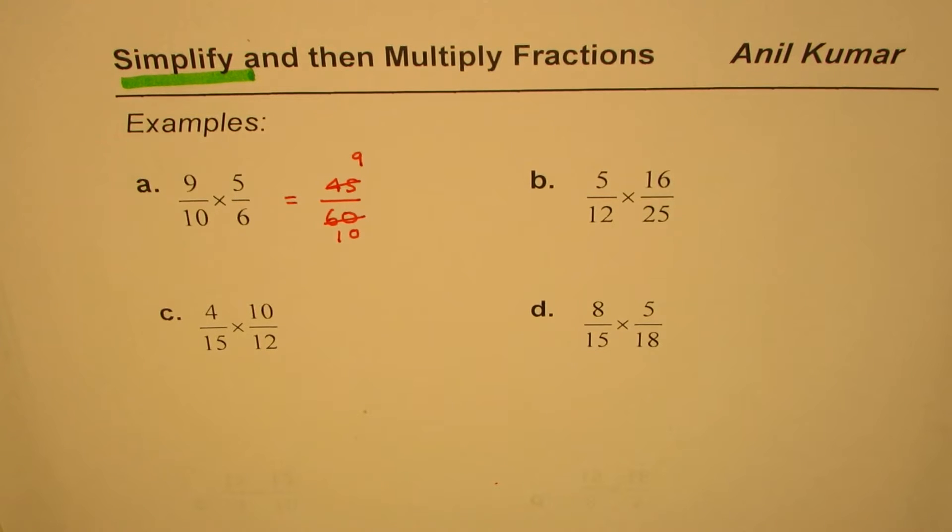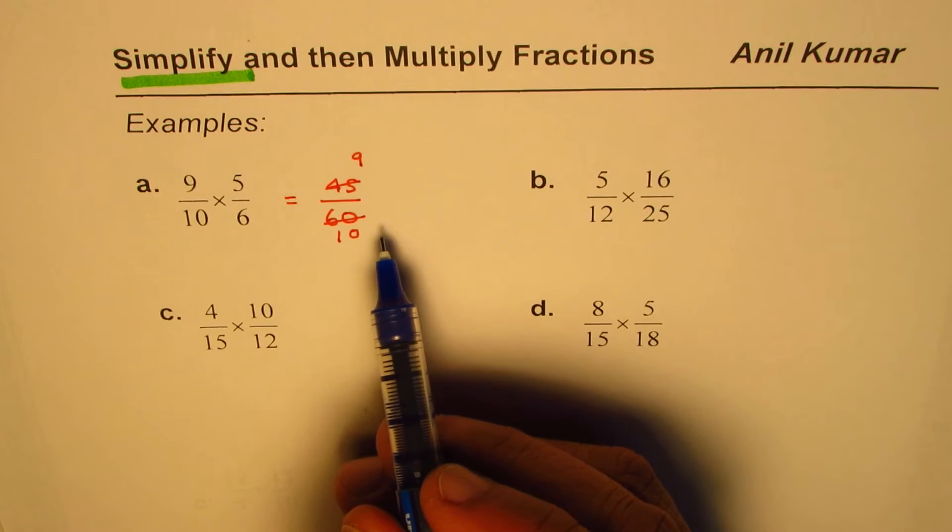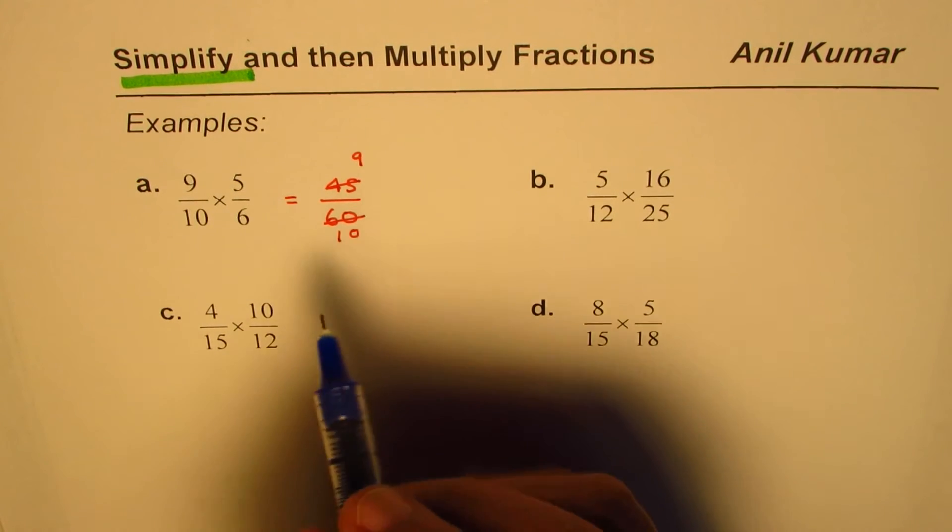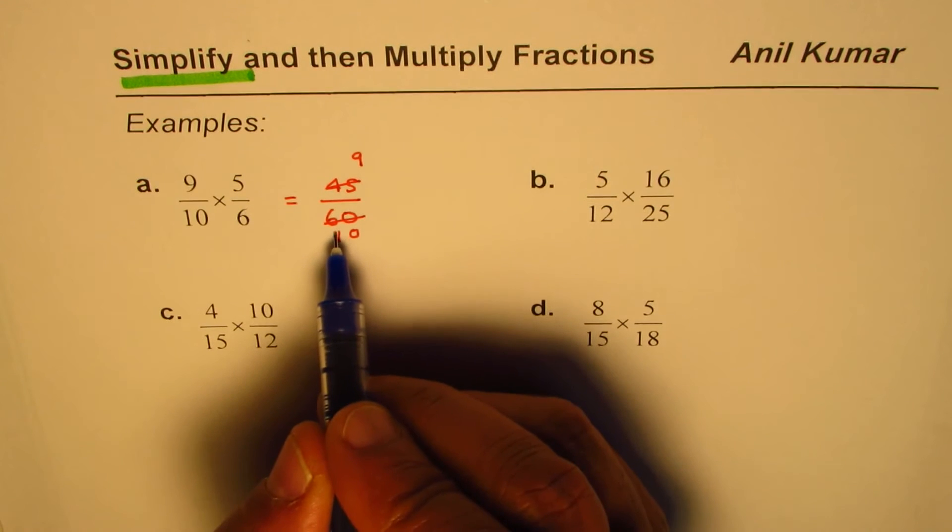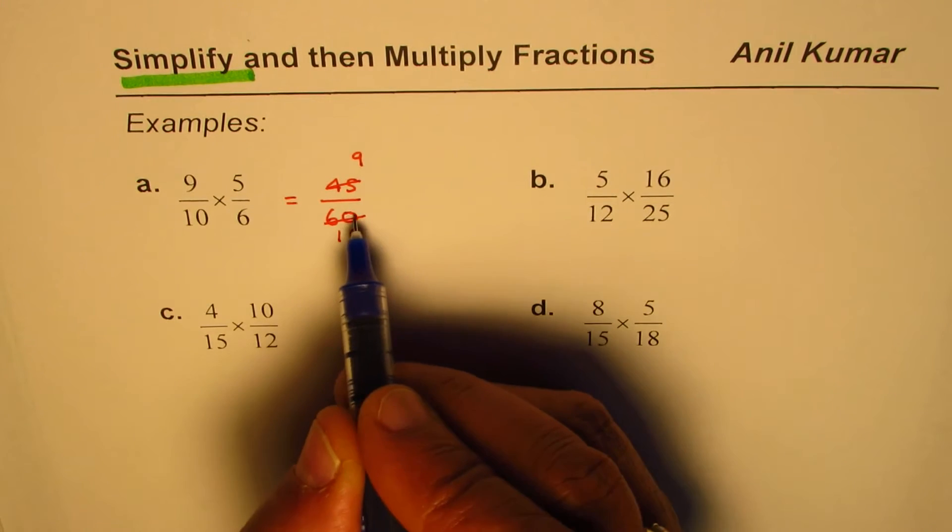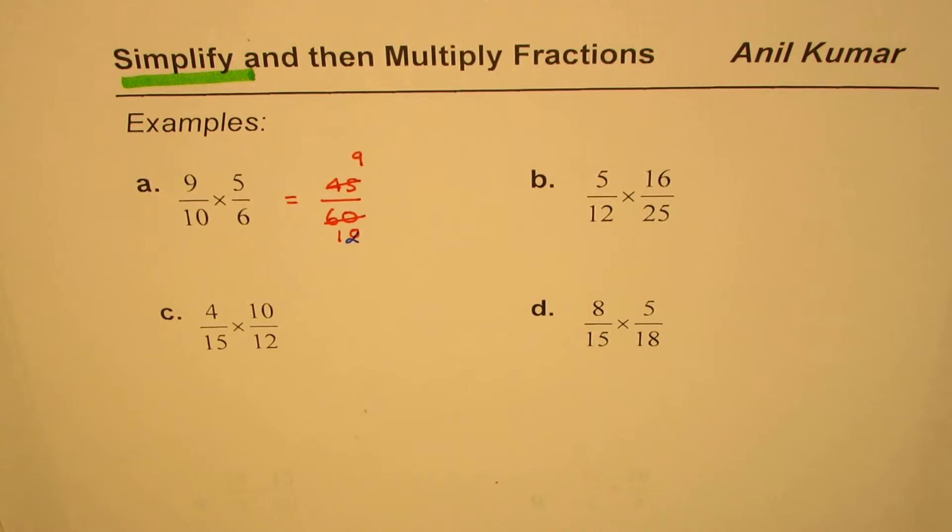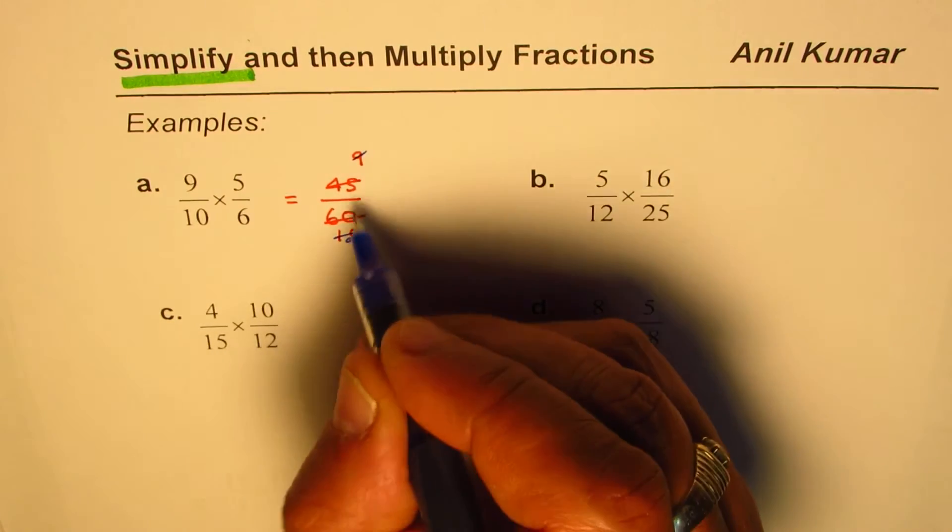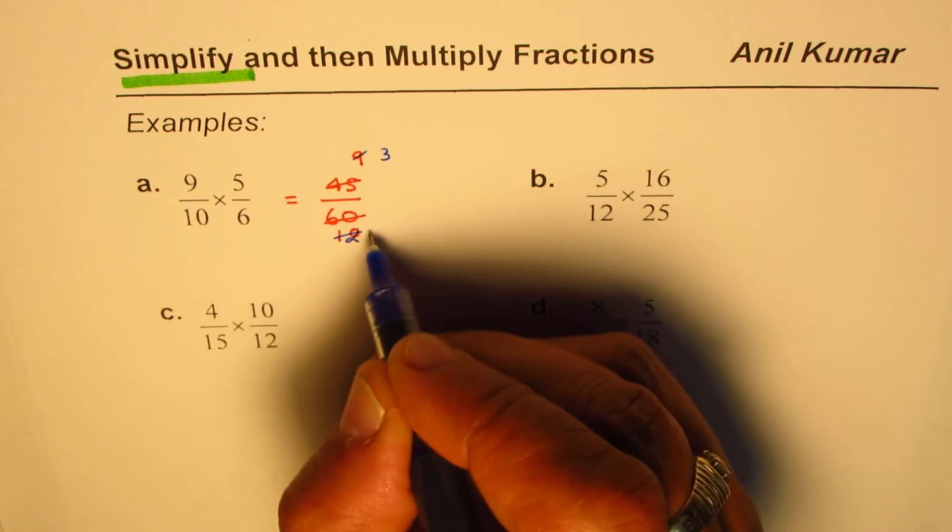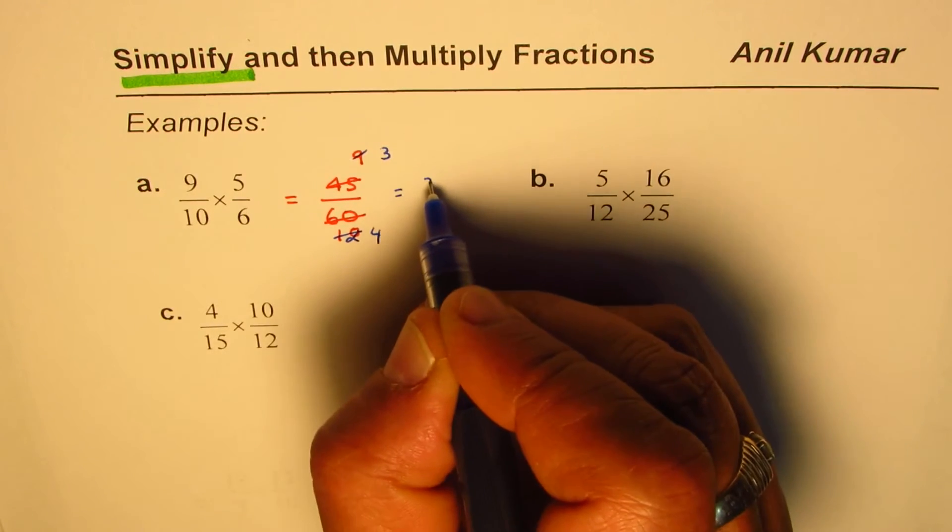Let me correct that. When you divide by 5: 45 divided by 5 is 9, and 60 divided by 5 is 12. So we get 9 over 12, which can be further simplified. Dividing both by 3, you get 3 over 4. So the answer is 3 over 4.